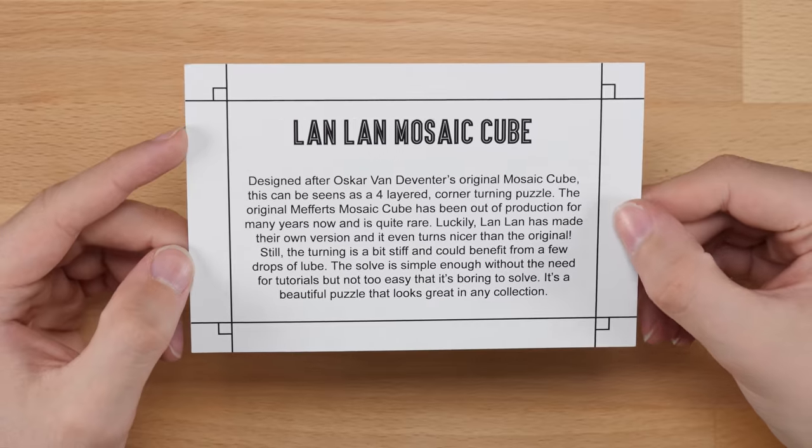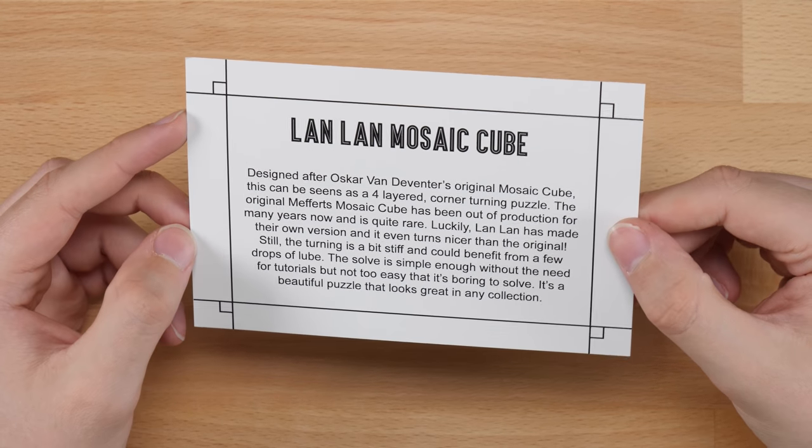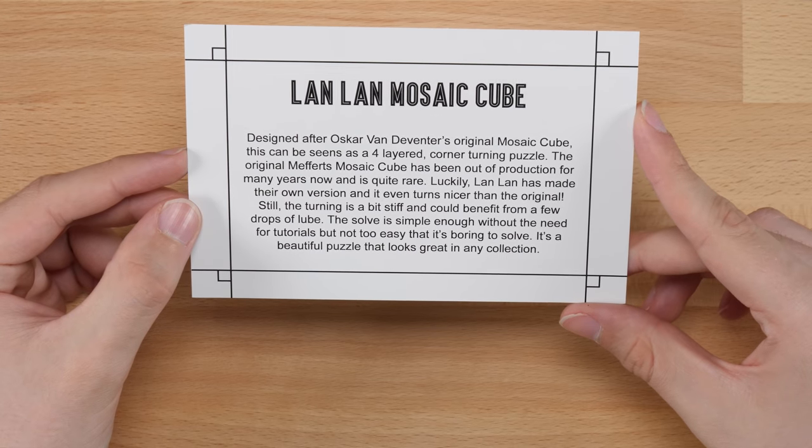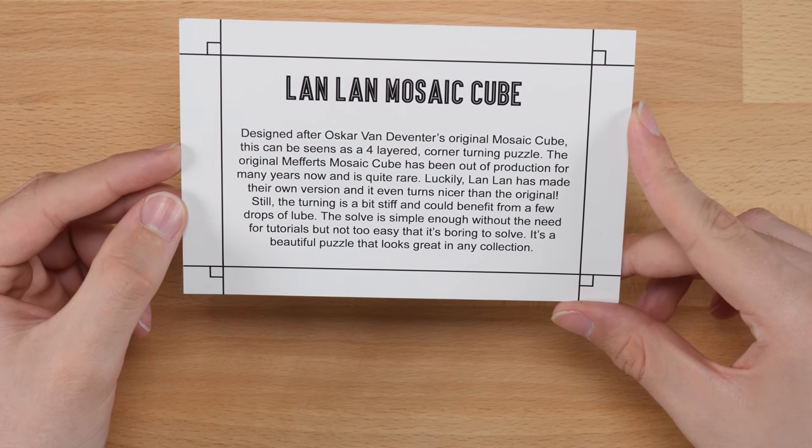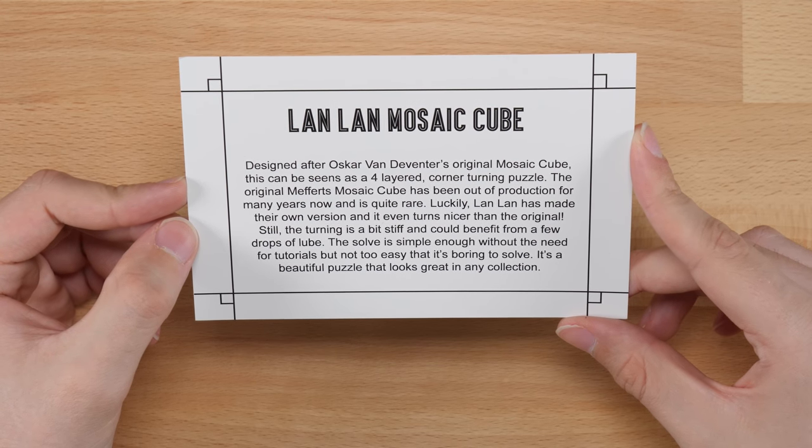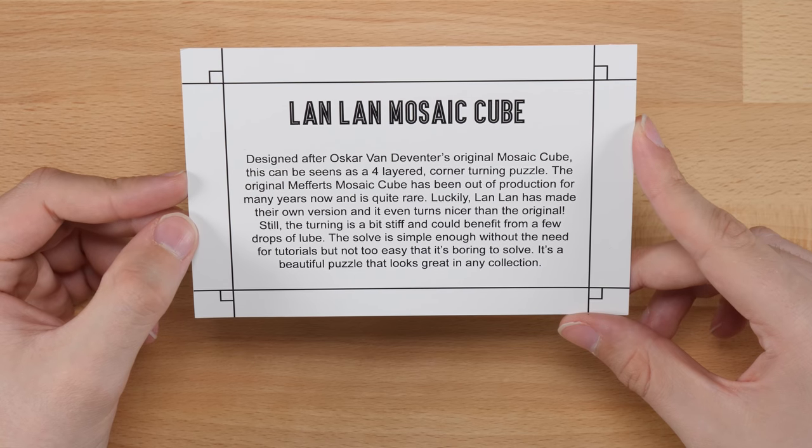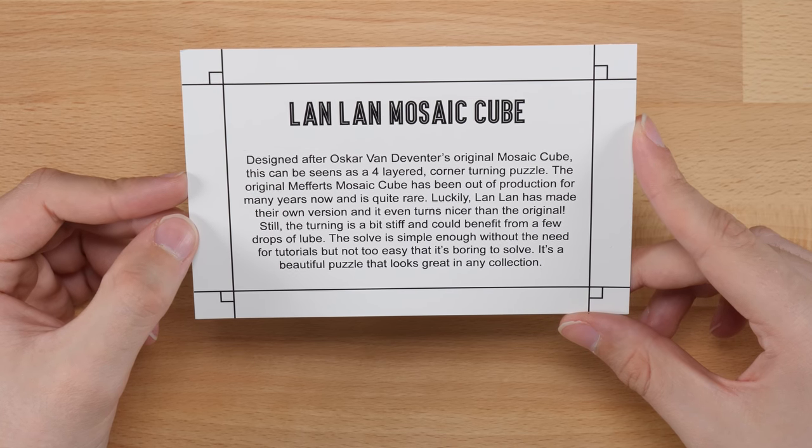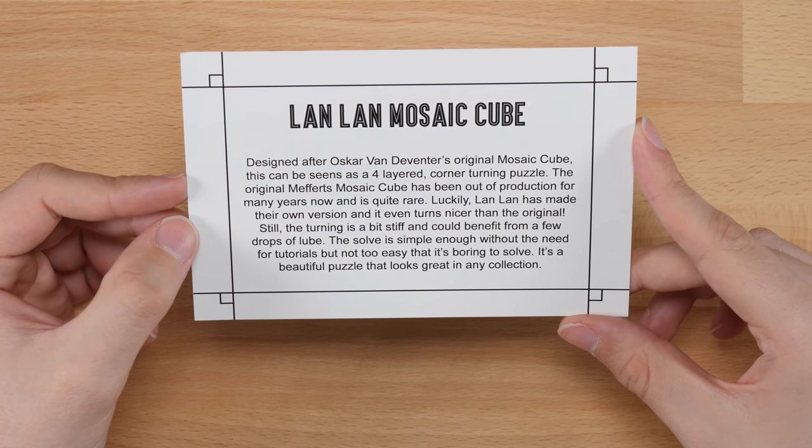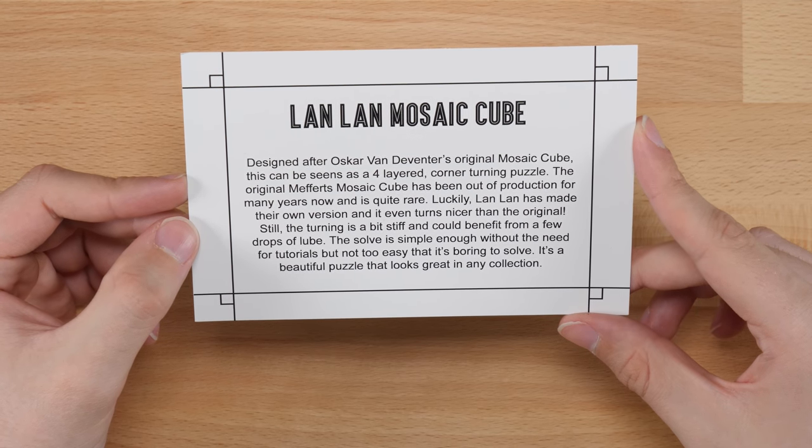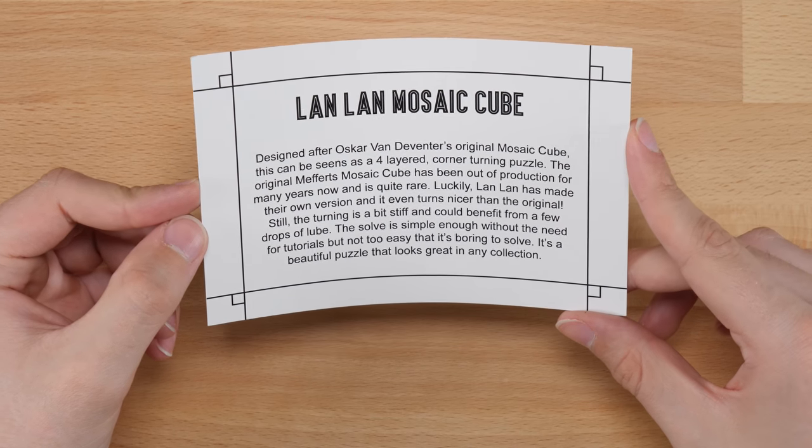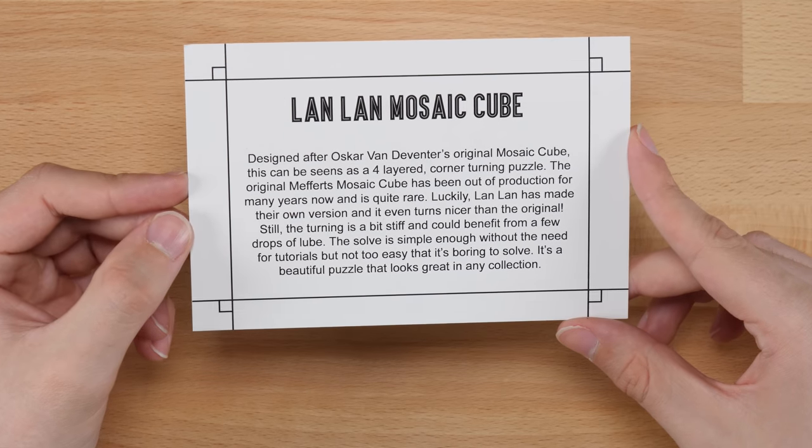All right. So the next one is the Lan Lan Mosaic Cube. So this says, Designed after Oscar van Deventer's original mosaic cube, this can be seen as a four layered corner turning puzzle. The original Meffert's mosaic cube has been out of production for many years now and is quite rare. Luckily, Lan Lan has made their own version and it even turns nicer than the original. Still, the turning is a bit stiff and could benefit from a few drops of lube. The solve is simple enough without the need for tutorials, but not too easy that it's boring to solve. It's a beautiful puzzle that looks great in any collection.